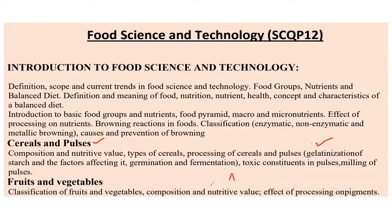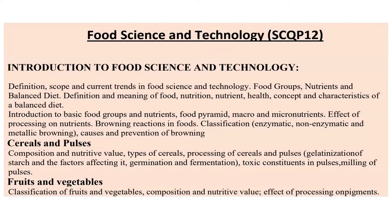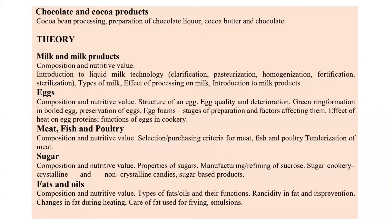From the fruits and vegetables topic, you can also expect sequence-type questions depending upon the quantity of a particular nutrient present in a food. Another very important area is the food source and the antioxidants or phytochemicals present in that food. Match-the-following questions are common — one side they give you the food name, the other side the phytochemical, and you have to match them.